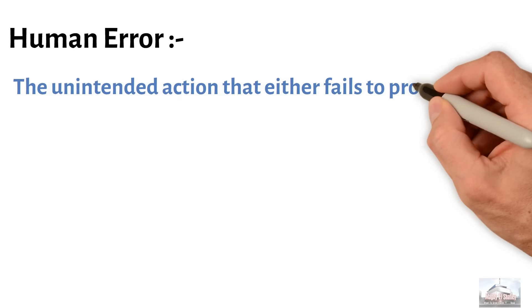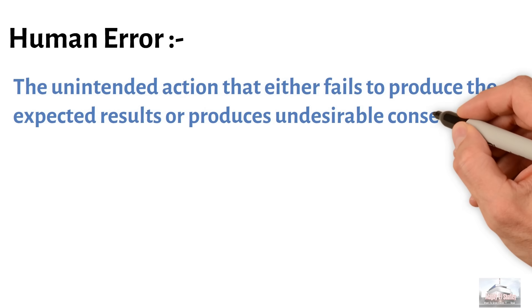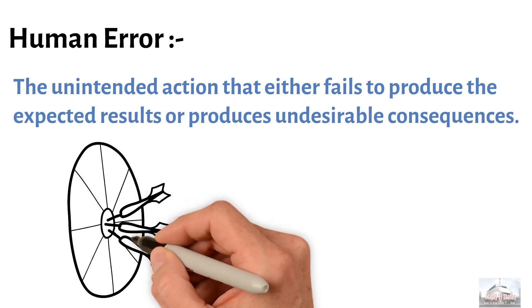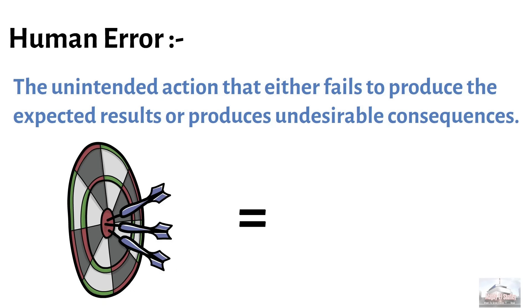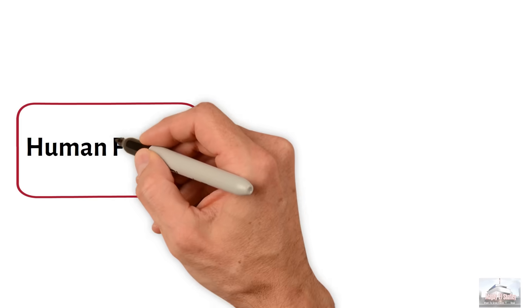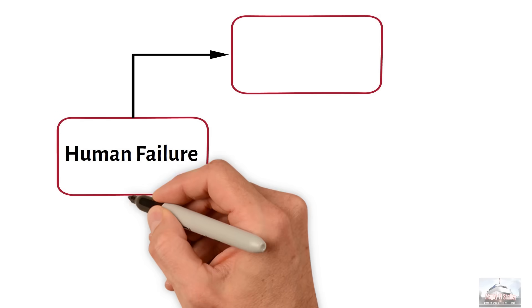So human error can be simply defined as the unintended action that either fails to produce the expected results or produces undesirable consequences. If there is intent behind the failure, it is classified as a violation rather than an error. Thus, human failure can be categorized into two main types.